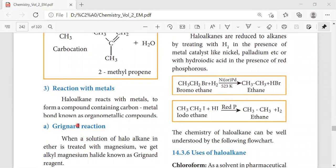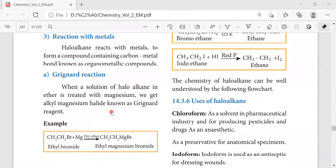Now, the reaction with metals. Haloalkane reacts with metal to form a compound that contains a carbon-metal bond which is known as organometallic compounds. The first one is the Grignard reaction. The Grignard reaction is simply R-Mg-X, which means R represents the alkyl group, Mg is magnesium, and X refers to the halogen group.